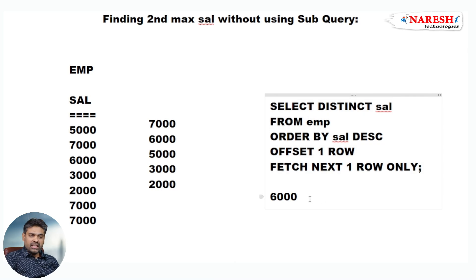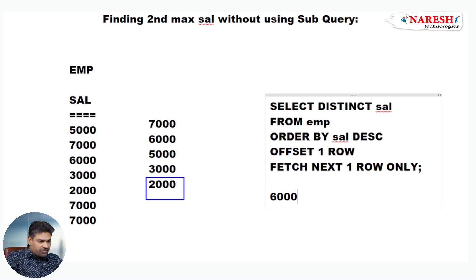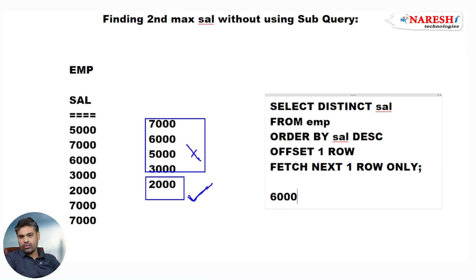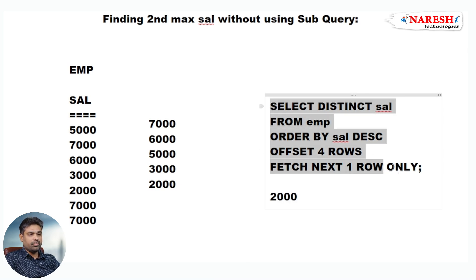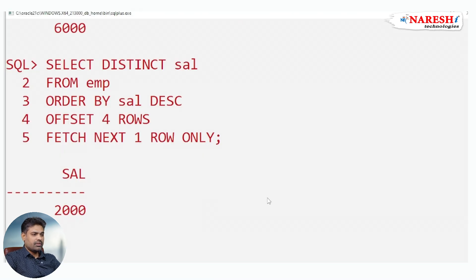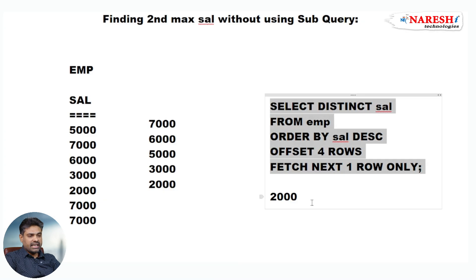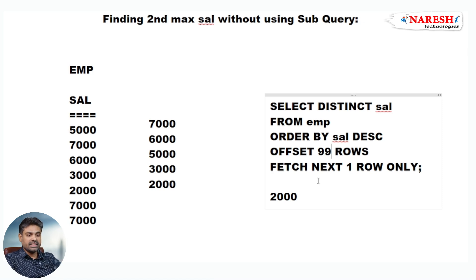Now using this query, not only second maximum salary — to find fifth maximum salary, or tenth maximum salary, or hundredth maximum salary, any Nth maximum salary you can find. For example, to find the fifth maximum salary, four rows display we have to skip, then fetch next one row. So write OFFSET 4 ROWS, FETCH NEXT 1 ROW ONLY — we get the fifth maximum salary. Observe the output, we are getting fifth maximum salary. For tenth maximum salary: OFFSET 9 ROWS, FETCH NEXT 1 ROW ONLY. For hundredth: OFFSET 99 ROWS, FETCH NEXT 1 ROW ONLY. This is the query to find Nth maximum salary without using a subquery.